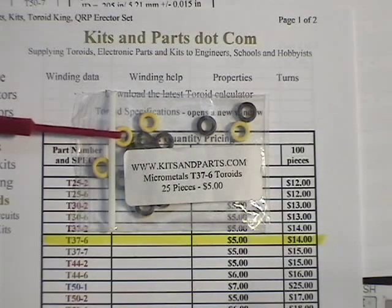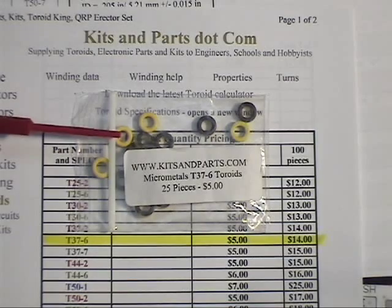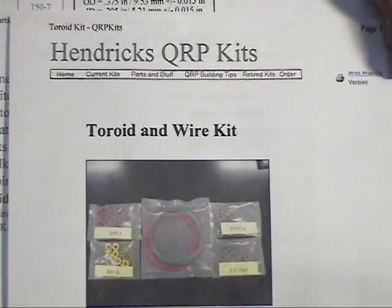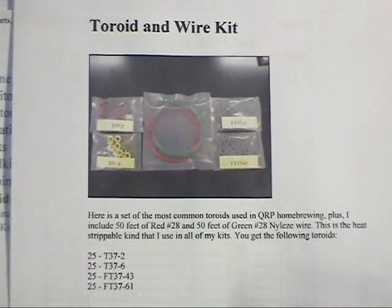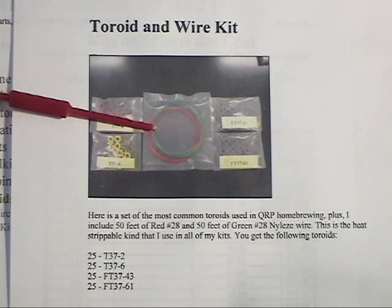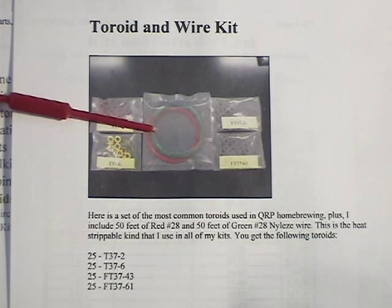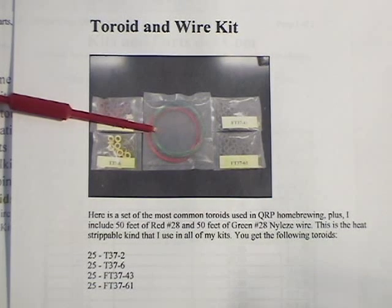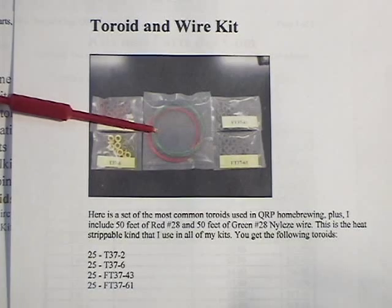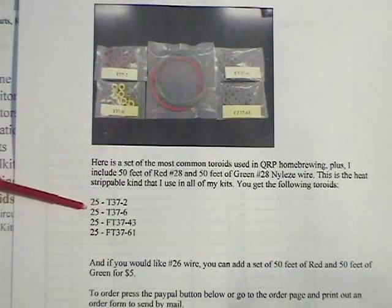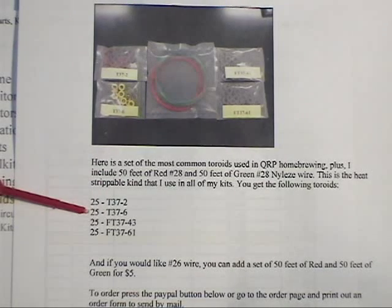The next thing we're going to need to find is going to be the wire. There's a couple different places we can find that. QRPkits.com has a toroid and core and wire kit. If you order that, you'll get 50 feet of number 28 of red and 50 feet of green wire. The two different colors are great if you're winding bifilar and trifilar transformers. It helps you keep the different windings separated from each other, and it's got 25 pieces of the different cores. Doug has great customer service. I've dealt with him several times and completely happy with every time I've bought something from him.